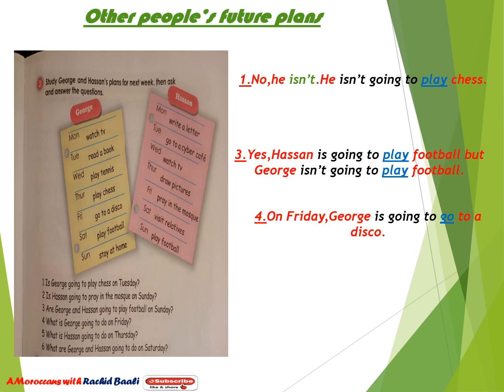For number four: 'What is George going to do on Friday?' The answer: on Friday, George is going to go to a disco. Now let's do the three remaining ones together.